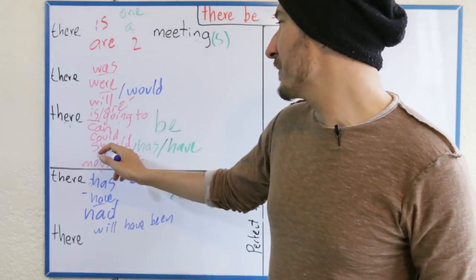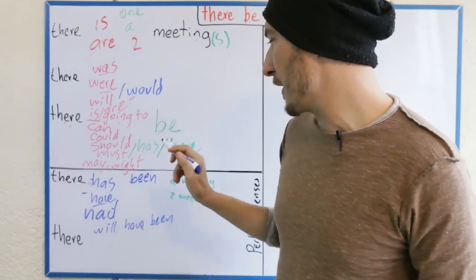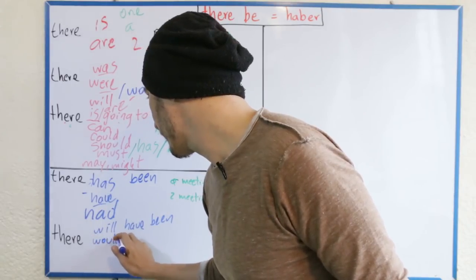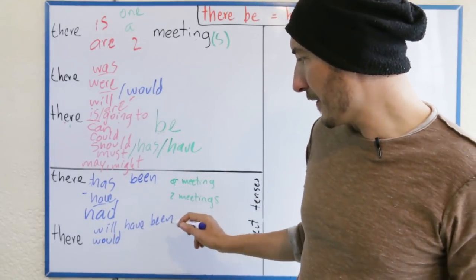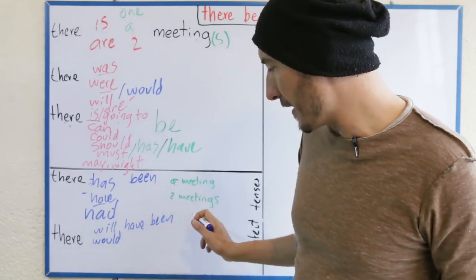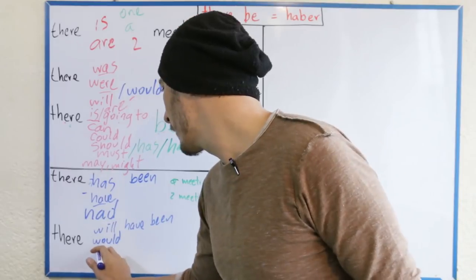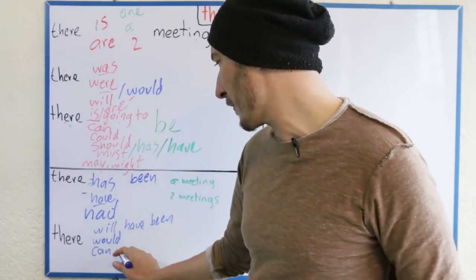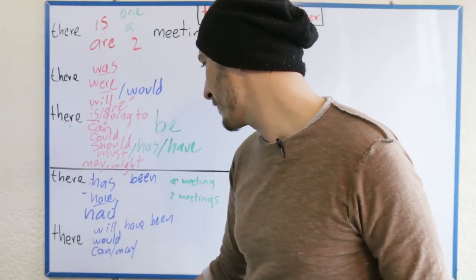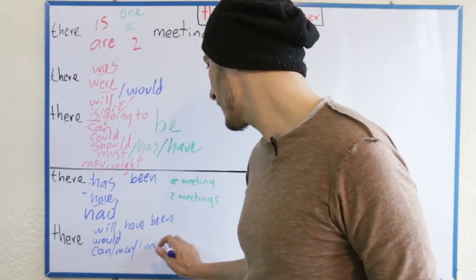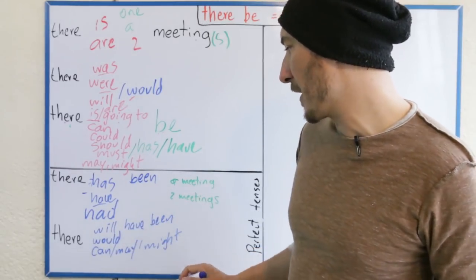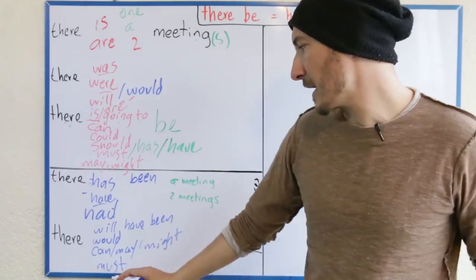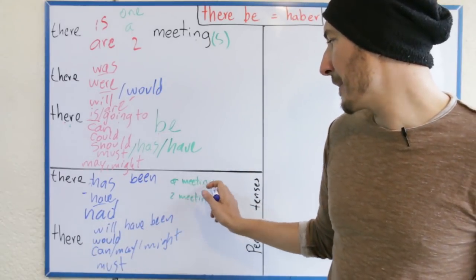Puede haber habido una reunión, debería haber habido una reunión, puede que haya habido una reunión — simplemente les cambio el 'will' por el 'would'. ¿Qué queda? Habría habido una reunión — there would have been a meeting. Con el 'can': puede que haya habido una reunión — there can have been a meeting; aunque me suena más natural con 'may' o también podría ser con 'might'. Puede que haya habido dos reuniones. Tiene que haber habido una reunión — es que no hay duda de que eso tuvo que haber pasado: there must have been a meeting.